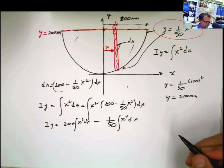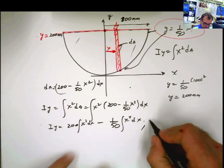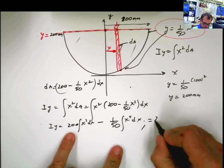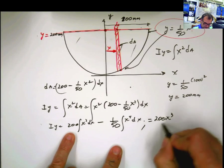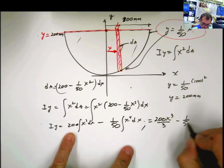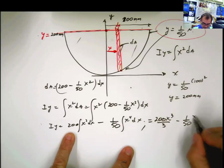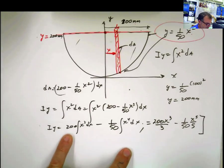Now I get to solve the integrals. And then I y is going to be equal to 200 x to the third divided by 3 minus 1 over 50, x to the fourth, 4 plus 1, 5, divided by 5. x to the fifth divided by 5. And this is going to be evaluated between...